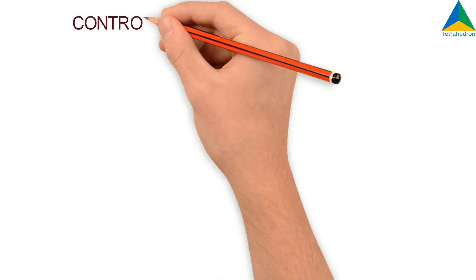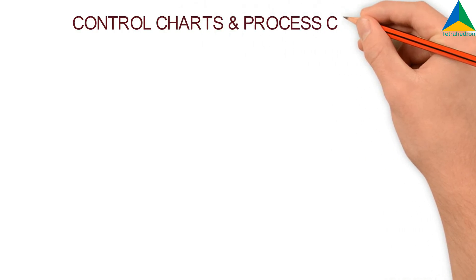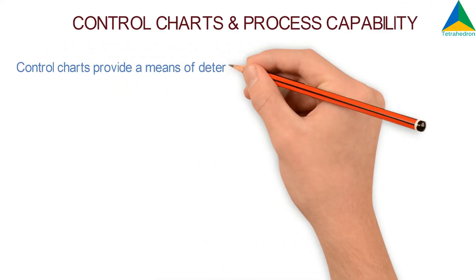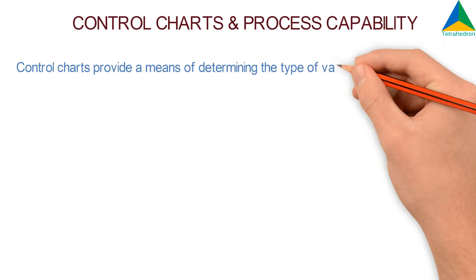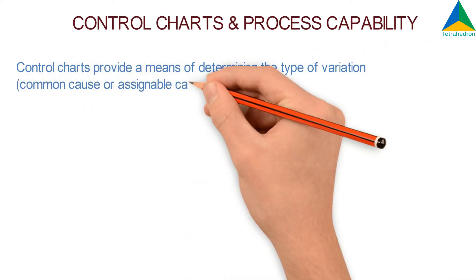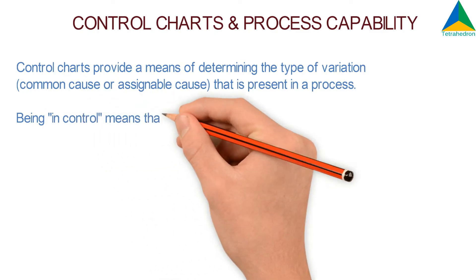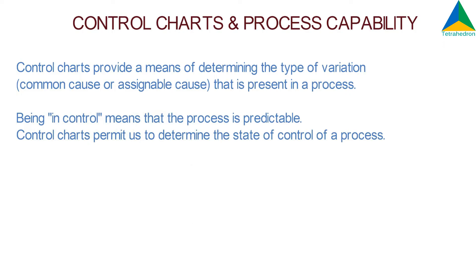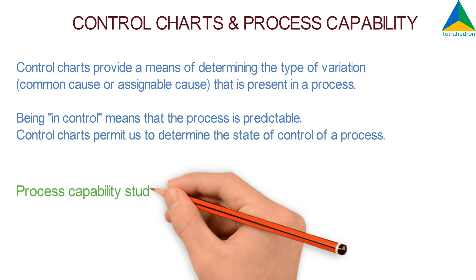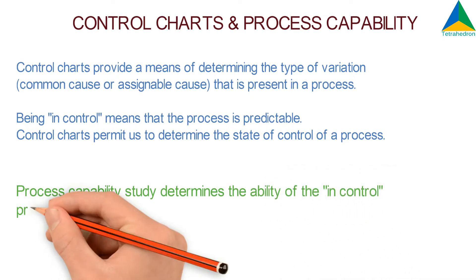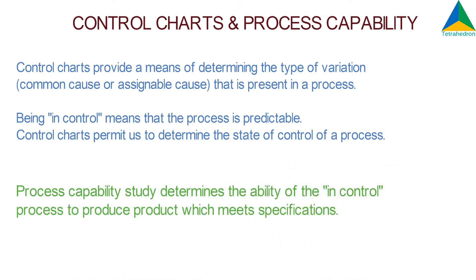Control Charts and Process Capability. Control Charts provide a means of determining the type of variation — common cause or assignable cause — that is present in a process. Being in control means that the process is predictable. Control Charts permit us to determine the state of control of a process. Process Capability Study determines the ability of the in-control process to produce product which meets specifications.